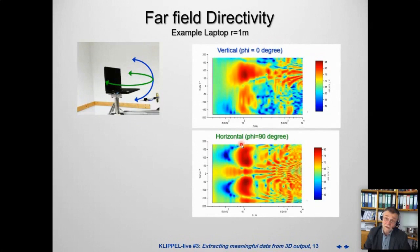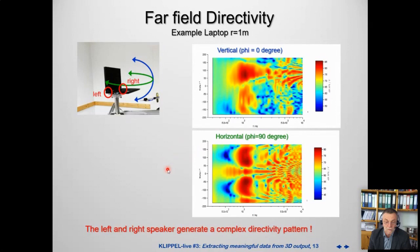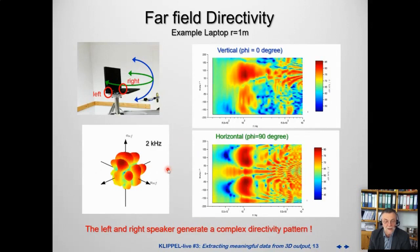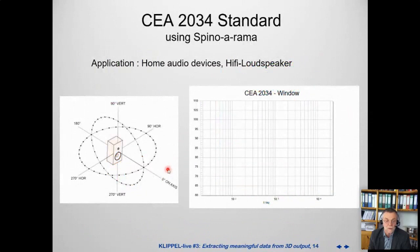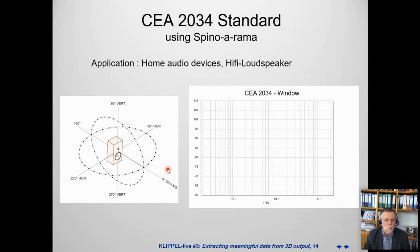Looking at a laptop loudspeaker as an example: operating the two speakers in mono produces a complex directivity pattern easily handled by the near-field scanner, but there's a lot of data to interpret. The next goal of this webinar is to show how to extract the most meaningful data. Here's where Floyd Toole's or Jean Olive's ideas become very useful — for normal home audio devices, we don't need all the directivity data.